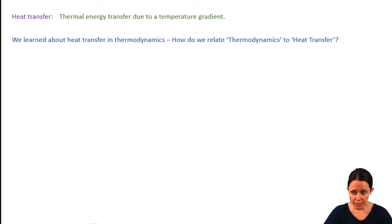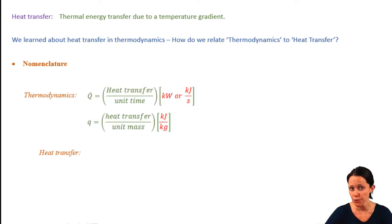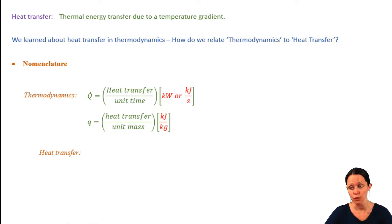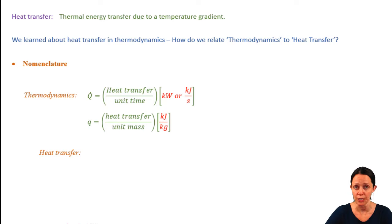Before we go forward, we need to talk about a few of the differences in how we deal with heat transfer in this class versus in thermodynamics. In thermodynamics we refer to the heat transfer rate as q dot, which has units of kilowatts, and heat transfer per unit mass as little q, with units of kilojoules per kilogram. But in our heat transfer text — the Incropera and DeWitt book — we use little q to refer to the heat transfer rate instead of q dot. Different texts use different nomenclatures, so be aware of that.